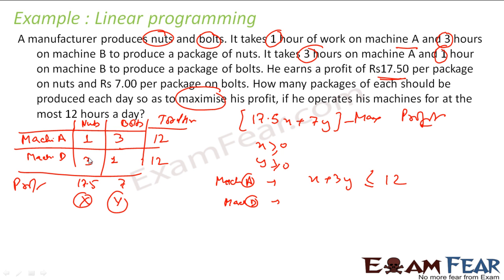Similarly, machine B will be 3X plus Y. What time will it take? 3X plus Y has to be less than 12. So these are my four constraints, and I have to maximize this.